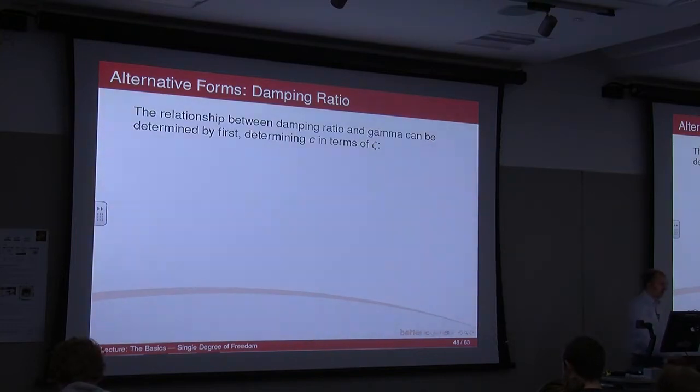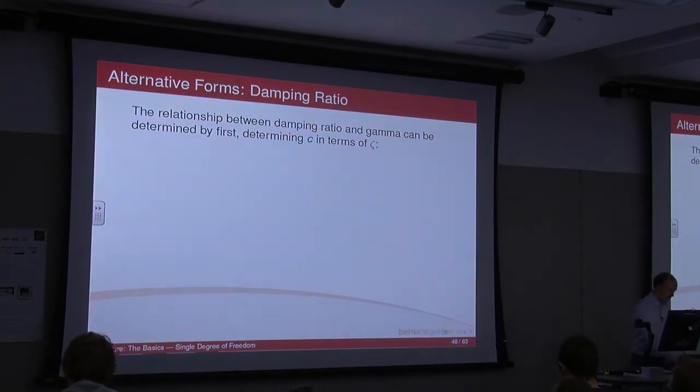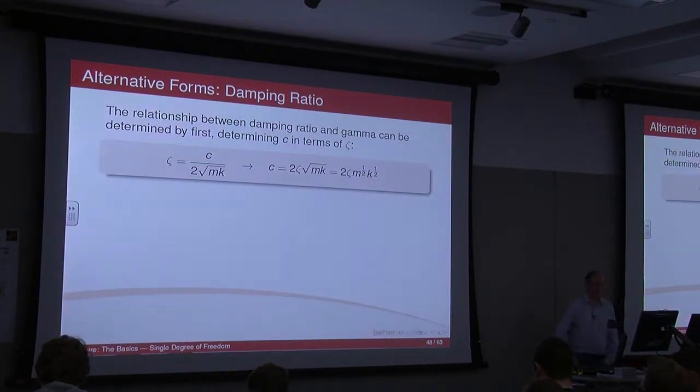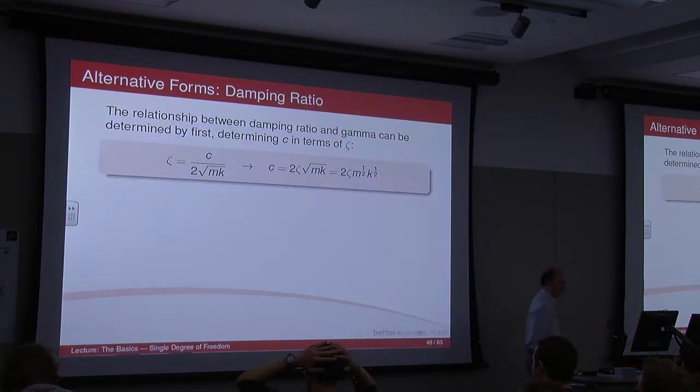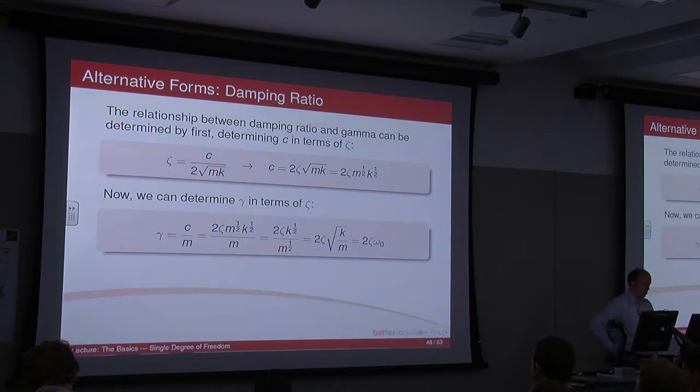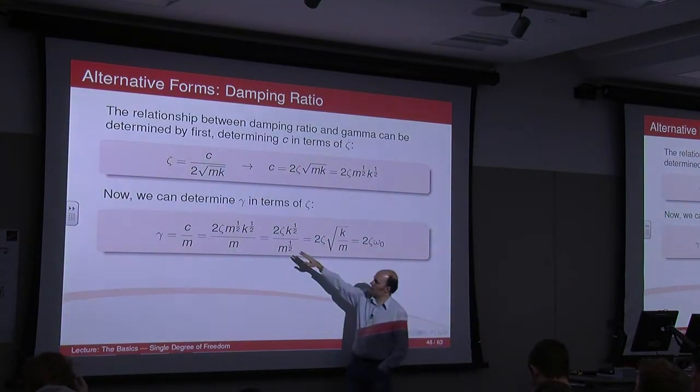The relationship between damping ratio and gamma can be determined by first determining c in terms of gamma. So if we've got our equation for damped ratio, if we rearrange the equation for c, we end up with 2 zeta root mk, and obviously root mk is m to the half k to the half. And so we can go therefore from, you know, the gamma is c upon m, so if we stick in what we've got for c at the top here,